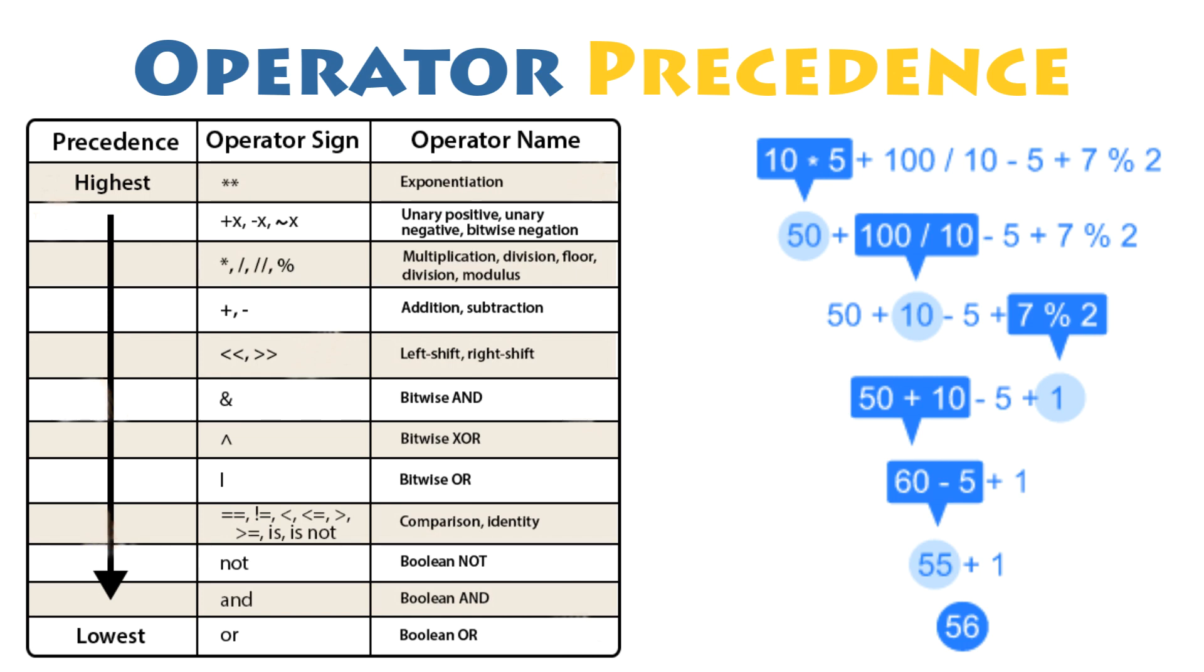Operators at the top of the table have the highest precedence, and those at the bottom of the table have the lowest. Any operators in the same row of the table have equal precedence.